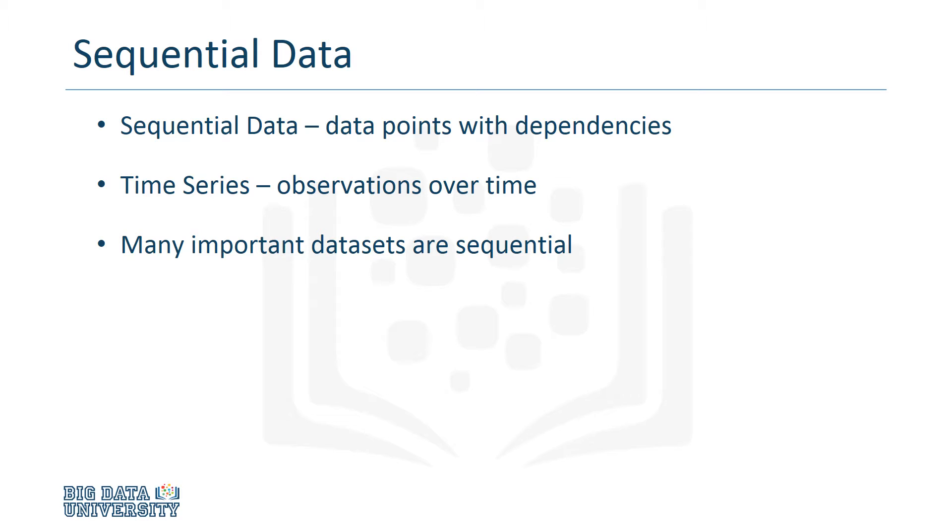There are other examples of sequential data, like sentences, stock prices, and even gene sequences, but traditional neural networks typically can't handle this type of data.